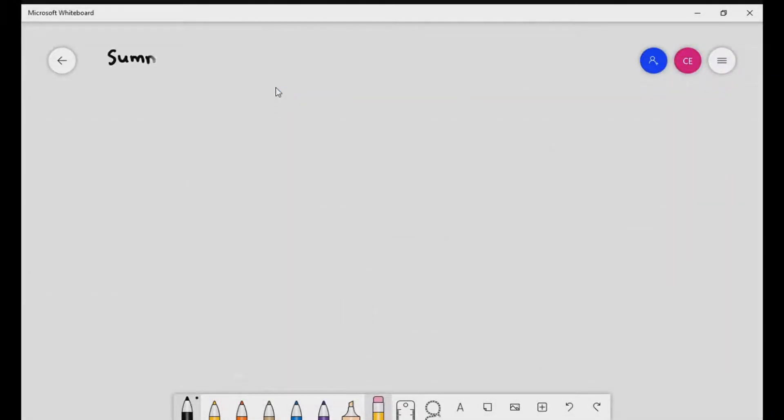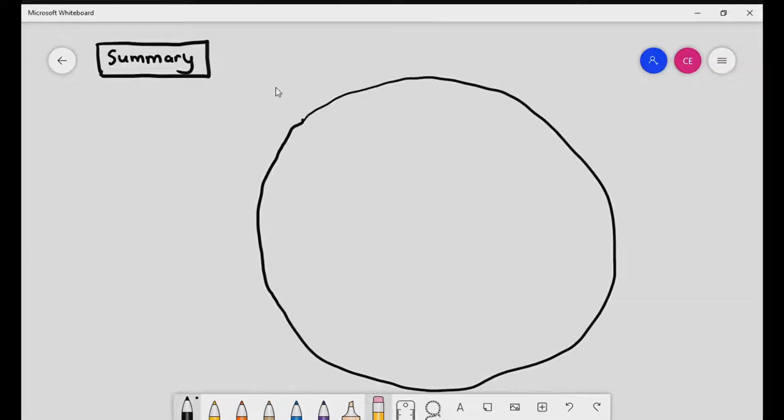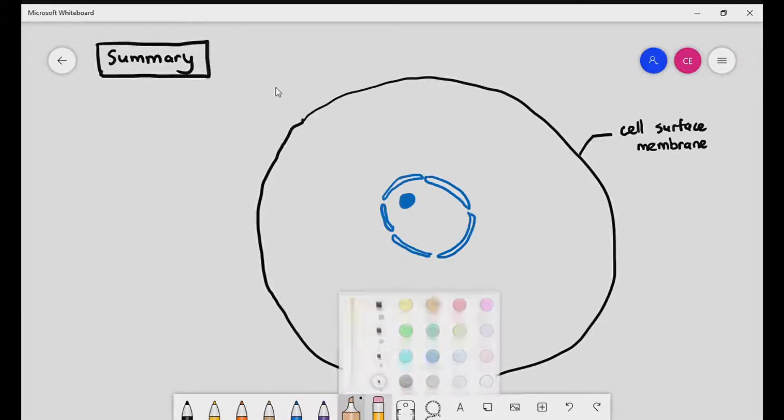So in summary, we have the cell surface membrane, which is a single membrane. And what I'm drawing right there is the nucleus. And how do we know that's the nucleus? You can actually see the double layer of the nuclear membrane, the condensed area which is the nucleolus,